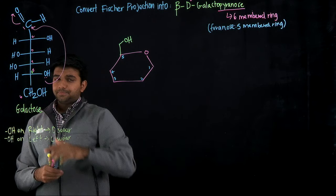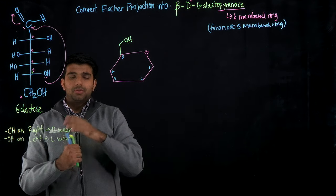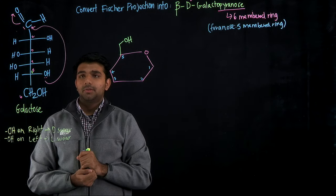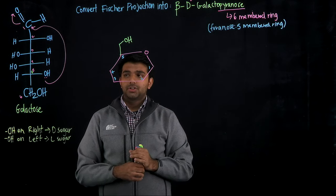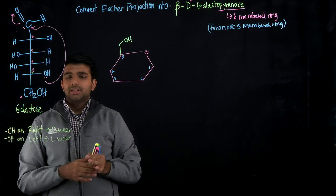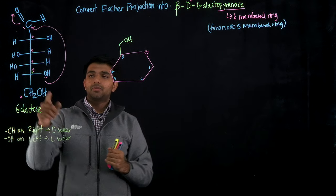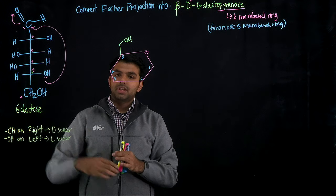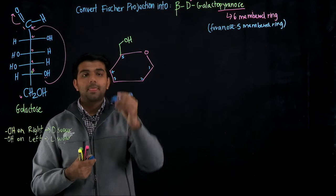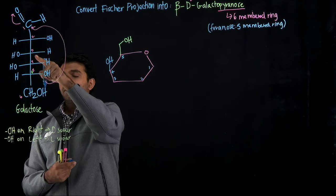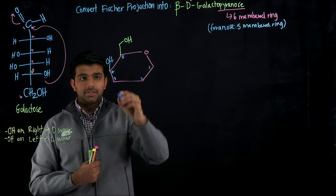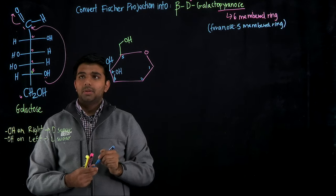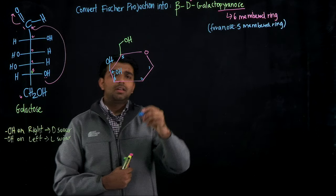Moving to carbon number four: since there's no CH₂OH or special group here, we determine the positioning based on which side the group appears on in the Fischer projection. If the hydroxyl group is on the left side of the Fischer, it goes up on the Haworth. If the OH is on the right side of the Fischer, it goes down on the Haworth. On carbon four we have an OH on the left, so it goes up. On carbon three, the OH is also on the left, so it also goes up. On carbon two, the OH is on the right side, so it goes down.